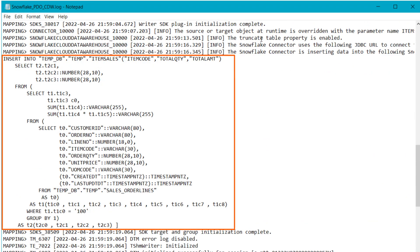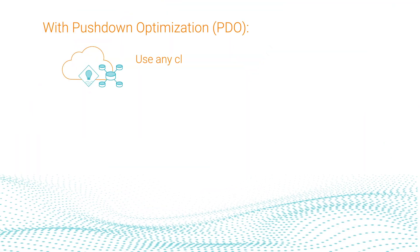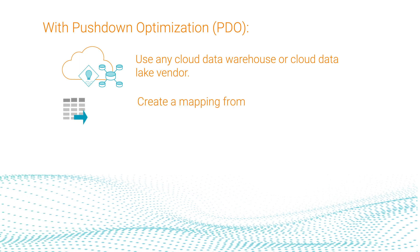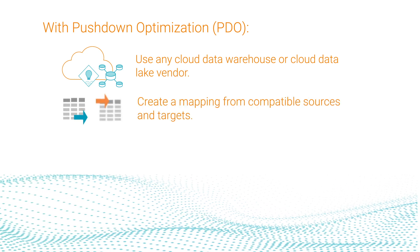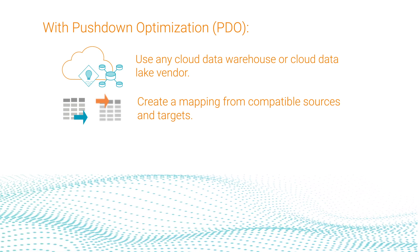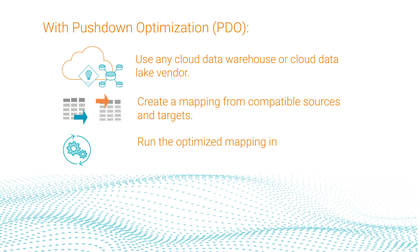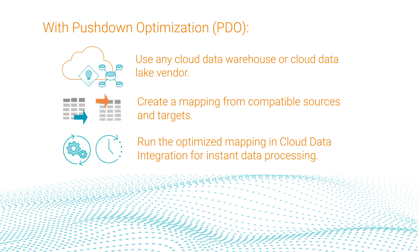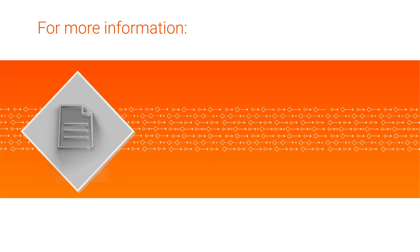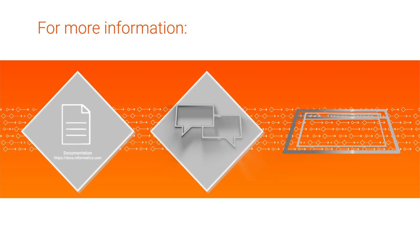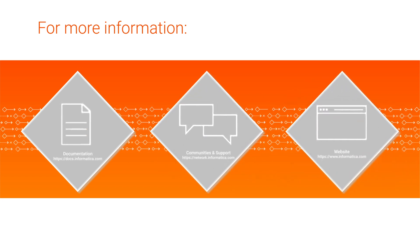And that's it! With Pushdown Optimization, you don't need to write vendor-specific instructions. Whatever your Cloud Data Warehouse or Cloud Data Lake type, you can pick any source or target and create a mapping, as long as the source and target are compatible. And when you enable Pushdown Optimization and run the mapping, Cloud Data Integration processes your data instantly. For more information, click the links in the description to view related documentation and videos, visit our communities and support hubs, or check out our website!